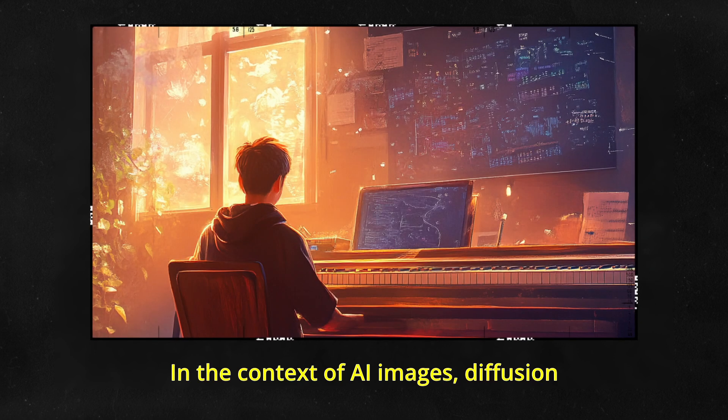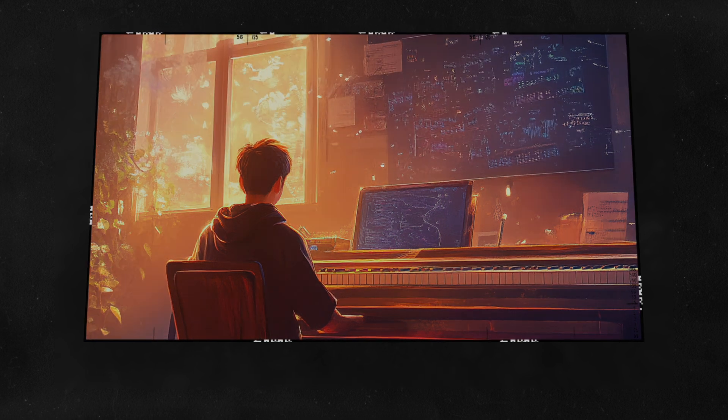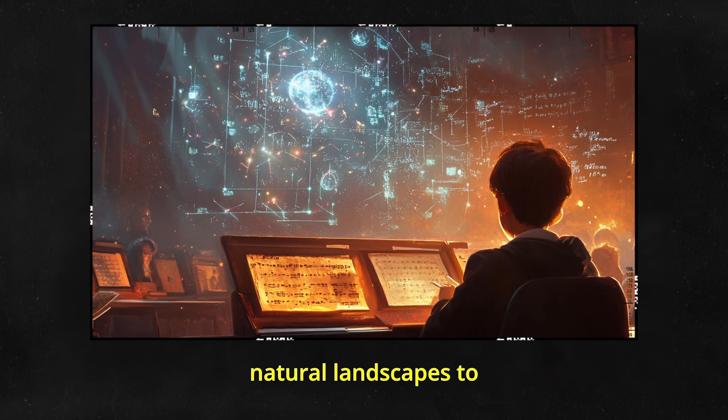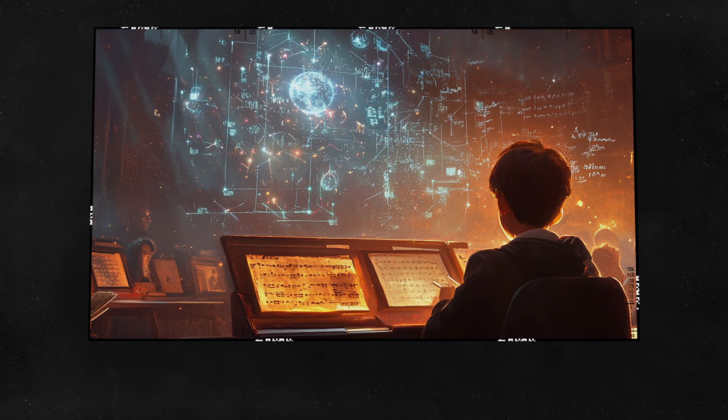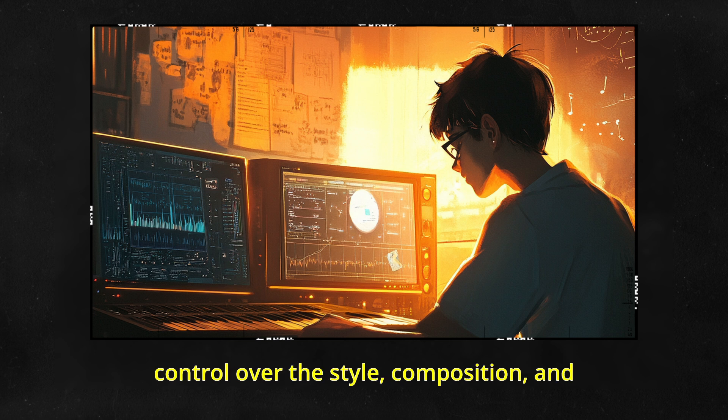In the context of AI images, diffusion models are used to create hyper-realistic visuals. These models can generate anything from natural landscapes to fantastical settings. Diffusion models can be conditioned on specific prompts, allowing for creative control over the style, composition, and subject matter of the generated imagery.